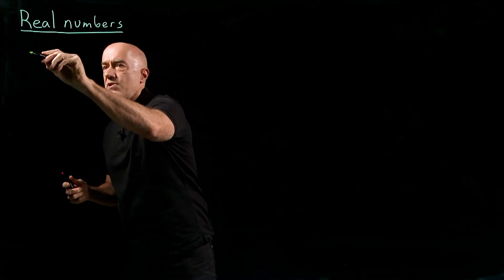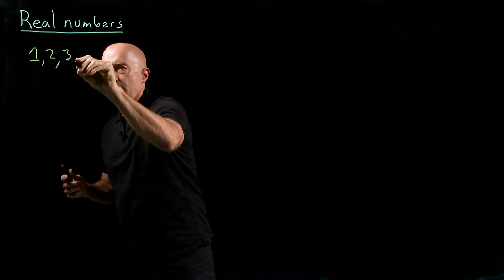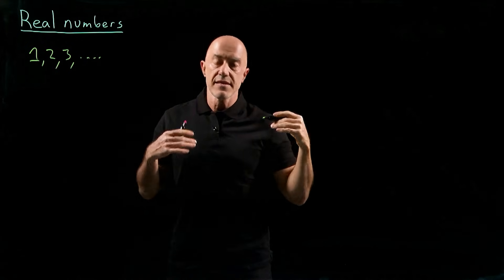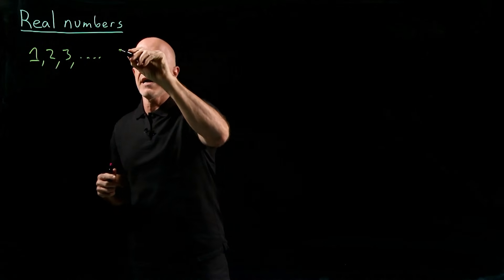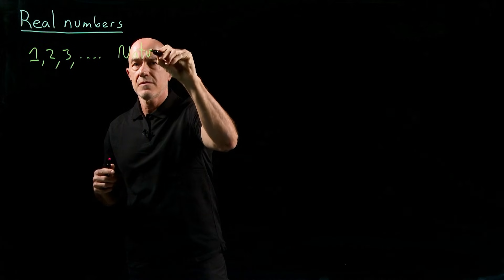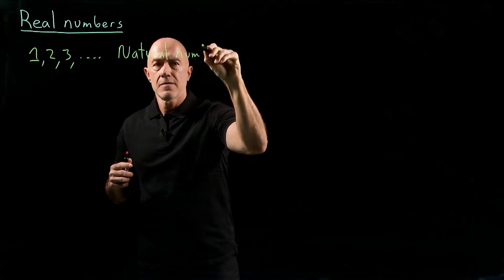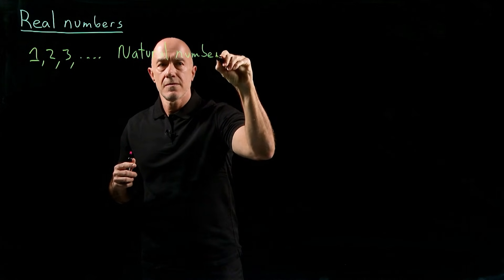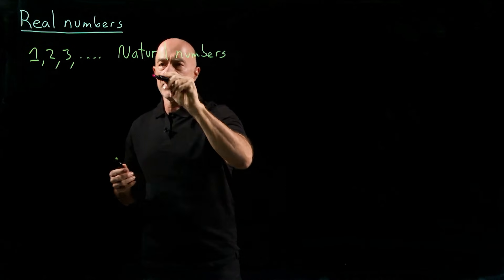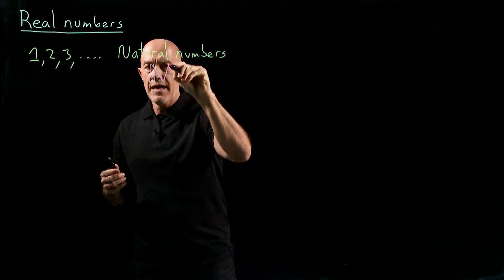So the first set of numbers — 1, 2, 3, and so on — are called the counting numbers, or sometimes they're called the natural numbers. And they get a special symbol, which is what we call blackboard N.